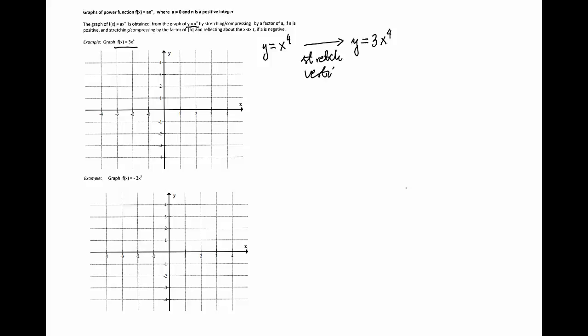To graph it, we'll first graph the function x to the fourth. The points negative 1, 1 and 0, 0 and 1, 1 are on this graph. For x = negative 2, the value is positive 16, which is outside of the picture. This is the graph of x to the fourth.